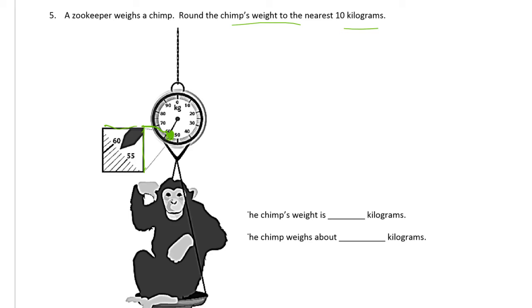We're rounding to the nearest 10, so we don't have to know exactly where this is. We can see it's a lot closer to the 60, and the 50 is not even in this little zoomed in picture, so it's clearly closer to the 60.